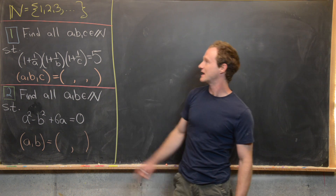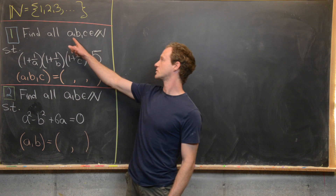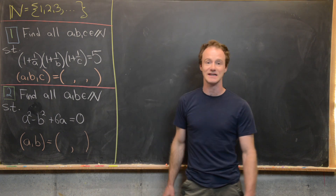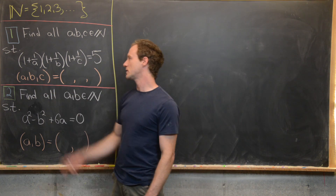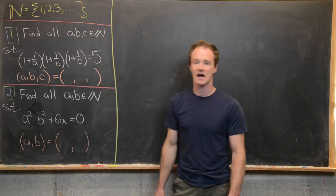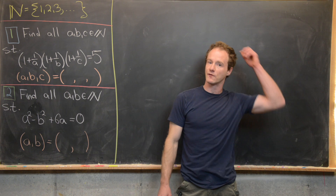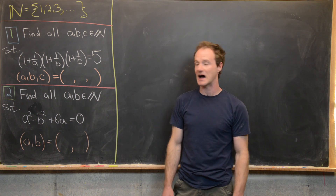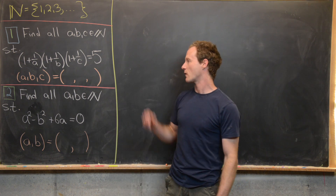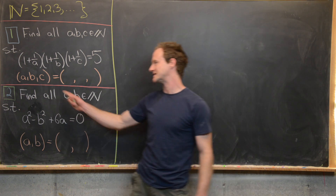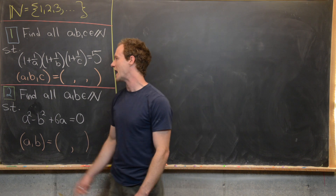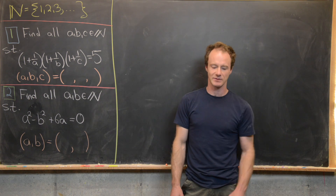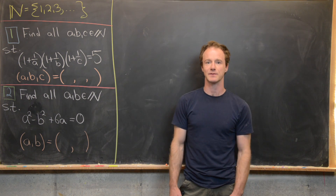So this first problem: find all natural numbers a, b, and c such that (1 + 1/a)(1 + 1/b)(1 + 1/c) = 5. And we'll write the solution as a triple — a comma b comma c equals something comma something comma something.